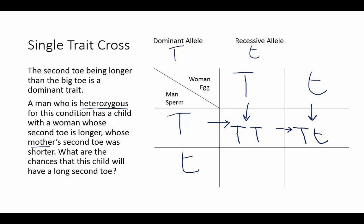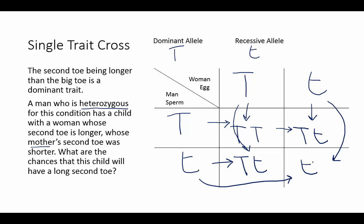In the third square, we get one big T from the top and one small t from the side, giving us one large T and one small t. In the last box, we have one allele from the top and one from the side — in this case, two small t's.